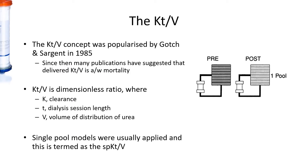While K was developed for the measurement of renal function, KT/V was developed for measurement of clearance in dialysis. This KT/V concept was popularized by Gotch and Sargent in 1985. KT/V is dimensionless, with K as the clearance in mLs per minute multiplied by T, the dialysis session length, and divided by V, which is the volume of distribution of urea. Single pool models were usually applied, and this is termed as single pool KT/V, in which we regard mathematically the patient as a single pool of fluid.